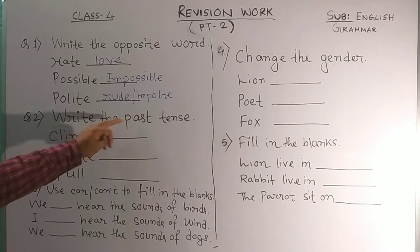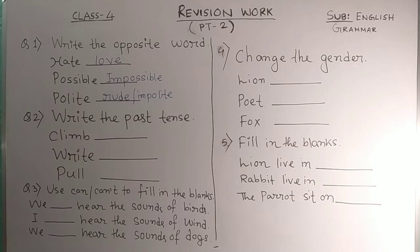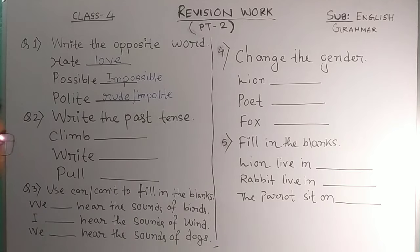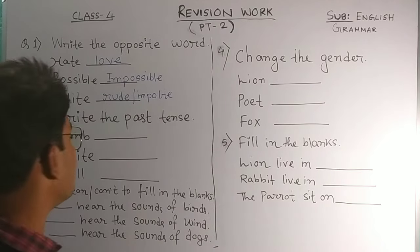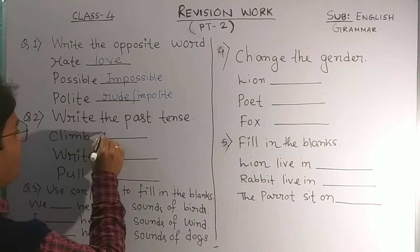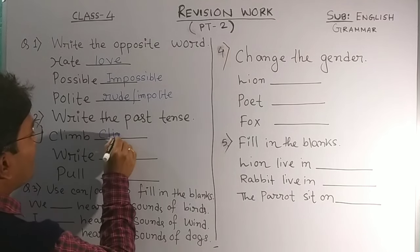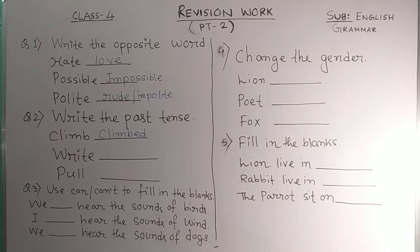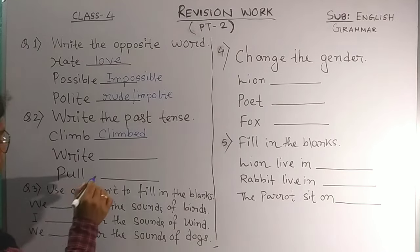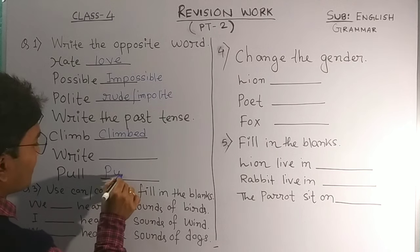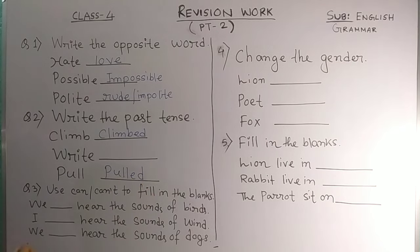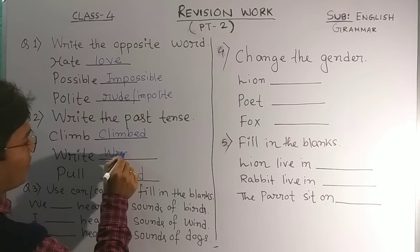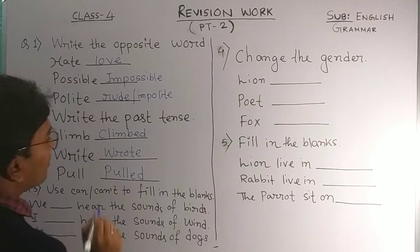Then write the past tense. You know that some past tenses we just add 'ed.' There are three types of verbs. So for 'climb,' we add 'ed,' so it is 'climbed.' For 'cool' also it is the same — 'cooled.' But the past tense of 'write' will be 'wrote.'